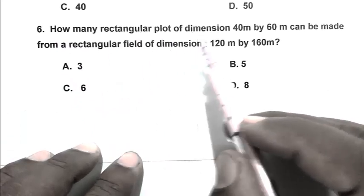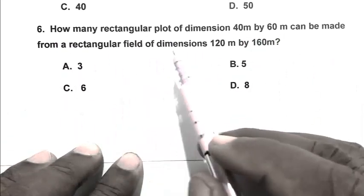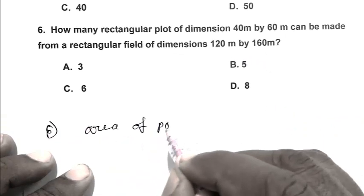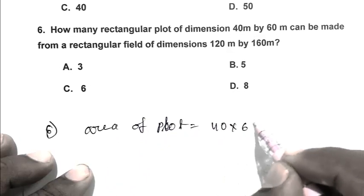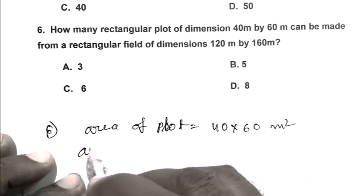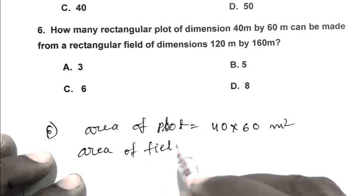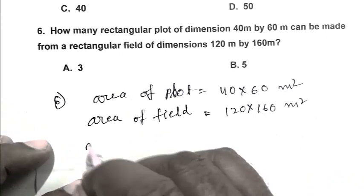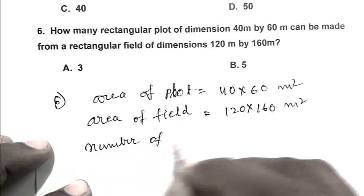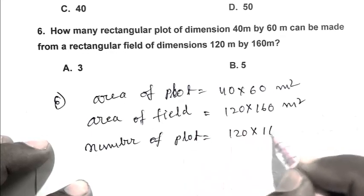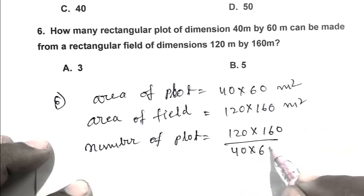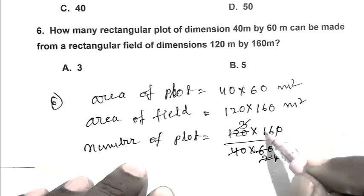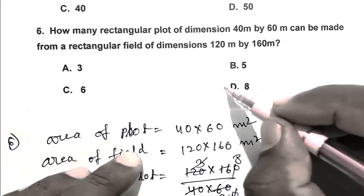Question number 6: How many rectangular plots of dimension 40 meters by 60 meters can be made from a rectangular field of dimension 120 meters by 160 meters? Area of plot is 40 × 60. Area of field is 120 × 160. Number of plots is 120 × 160 upon 40 × 60, which gives 3 × 20 upon 20 = 8. So D is the right answer.